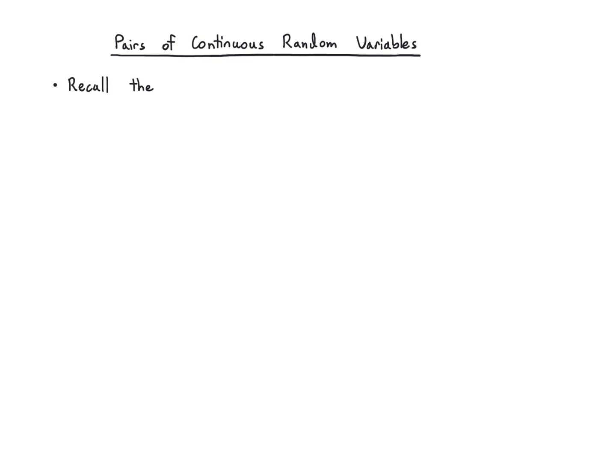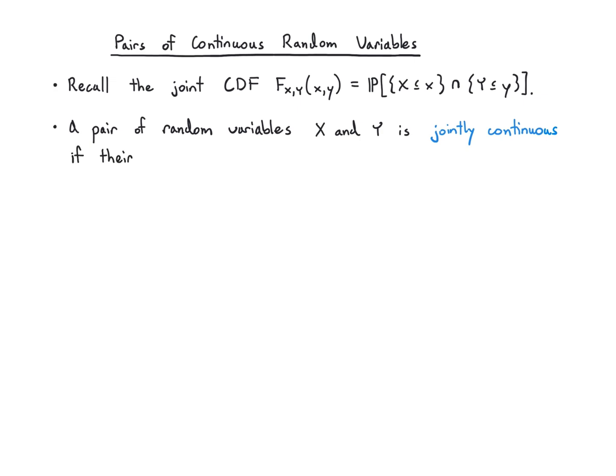Recall the joint CDF: F_XY(x,y) equals the probability that X is less than or equal to little x and Y is less than or equal to little y. A pair of random variables X and Y is jointly continuous if their joint CDF is a continuous function with no sudden jumps and is differentiable almost everywhere. We've seen this definition in the single variable continuous case; it's the same thing.